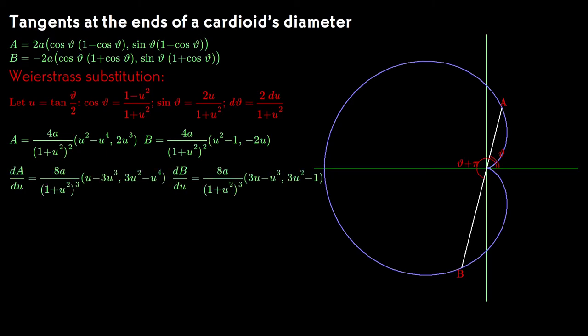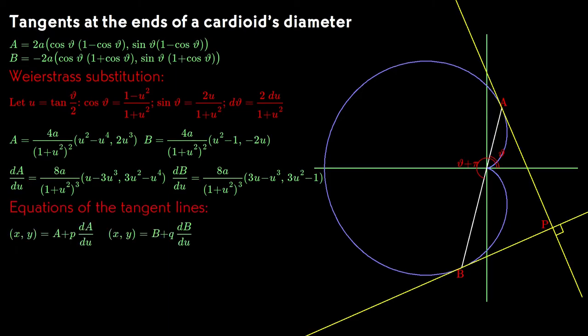Since we'll be working with tangent lines, we'll need the derivatives of the coordinates with respect to the parameters, so let's differentiate them now. We write out the equations for tangent lines, and we draw them in on the diagram.